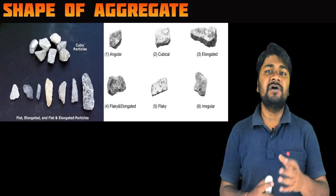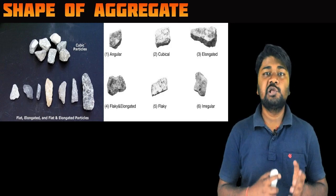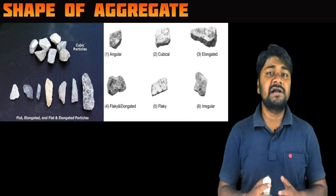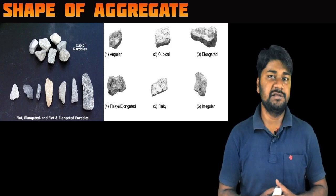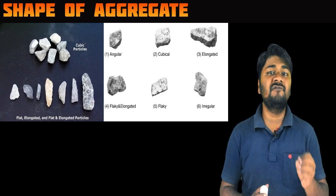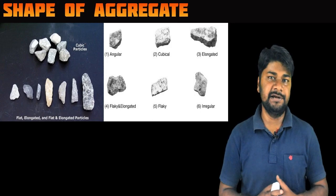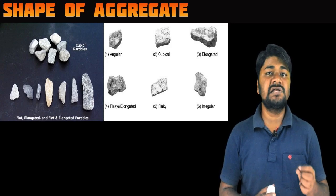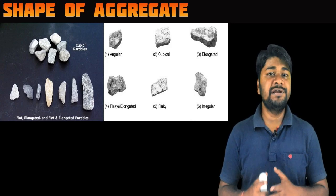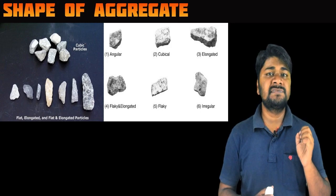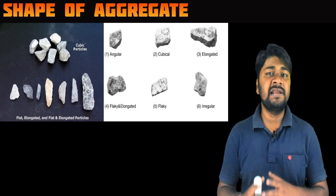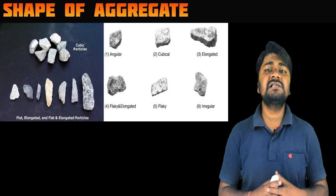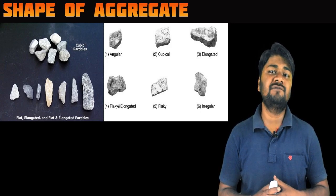The next factor is the shape of aggregate. There are many shapes of aggregates: angular, cubical, elongated, elongated flaky, irregular, and rounded. Angular aggregates are roughly textured and rounded aggregates are smoothly textured. Rounded aggregates create a problem of lack of bonding between cement paste and aggregate. Angular aggregates exhibit a better interlocking effect in concrete, but contain a large amount of voids, so well-graded aggregate is needed. The shape of aggregates becomes more important in high-strength and high-performance concrete where very low water-cement ratios are used. In such cases, cubical-shape aggregates with high grading are required for better workability.